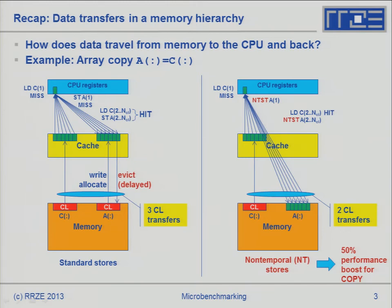For each 8-byte element you copy, you now only have 16 bytes going over the bus instead of 24, giving a predicted performance boost of 50% — just by exchanging the standard store instruction with a non-temporal store. It works. In simple cases like the stream benchmark, the Intel compiler sees the stream pattern and automatically generates non-temporal stores. You can save 50% performance almost for free. That's one example where a specific hardware feature reduces traffic across a slow data path — here the slow data path is memory bandwidth — to get a boost.